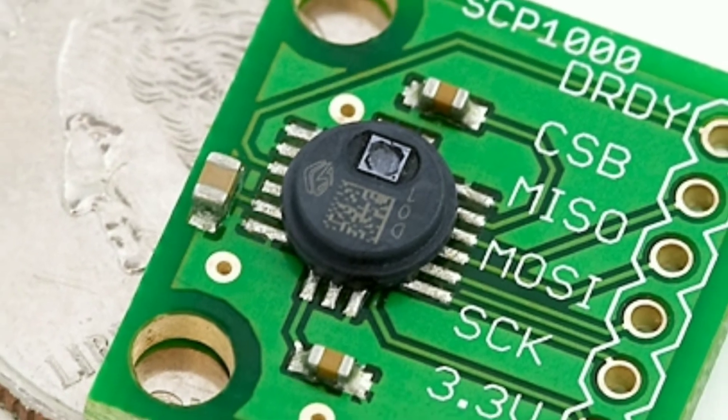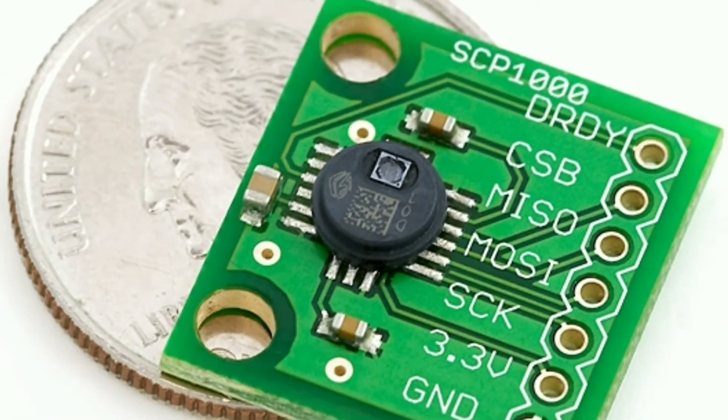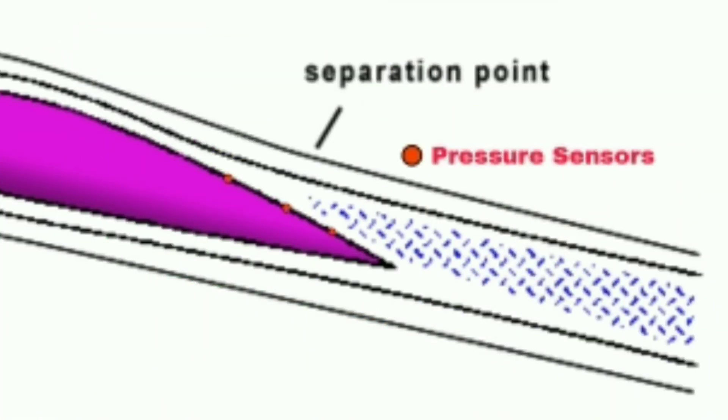System consists of MEMS pressure sensors for the detection of the stall. At the instant when aircraft wing enters stall, pressure disturbances will be detected by these sensors. These signals will be sent to the microcontroller.